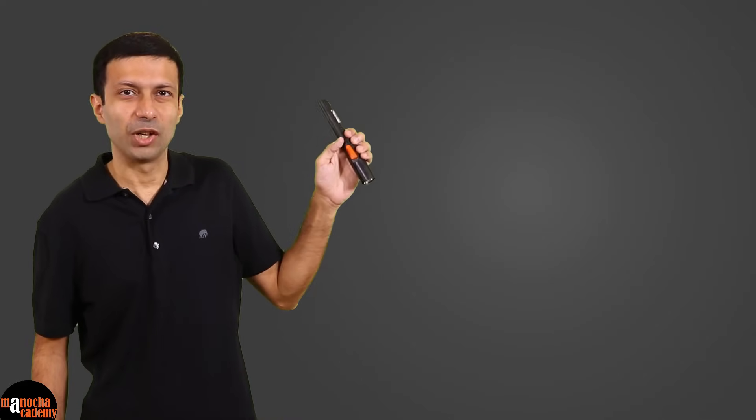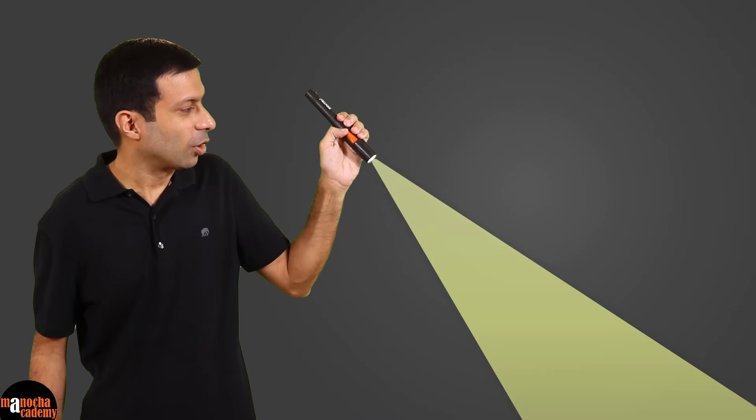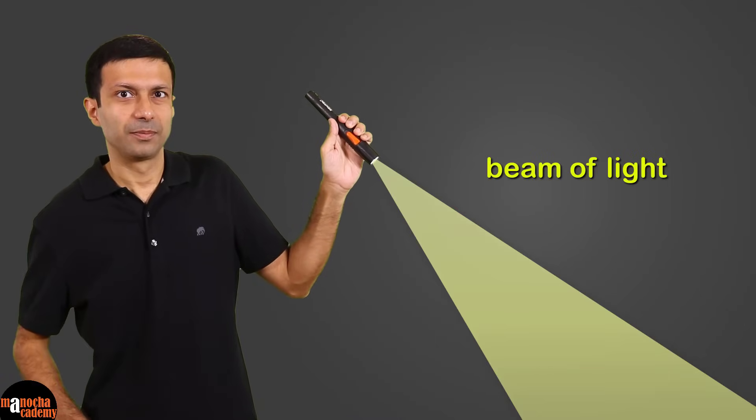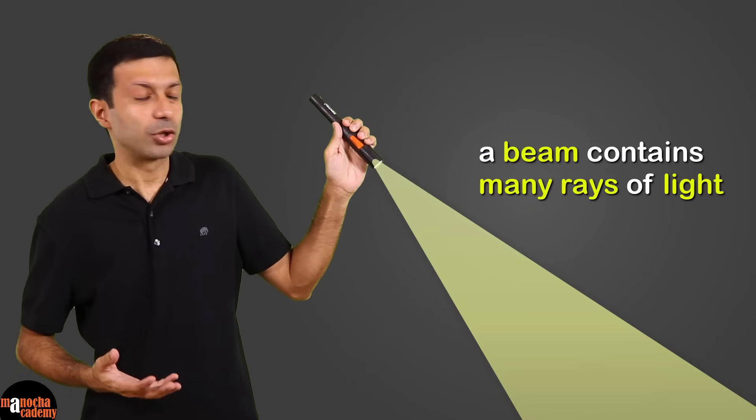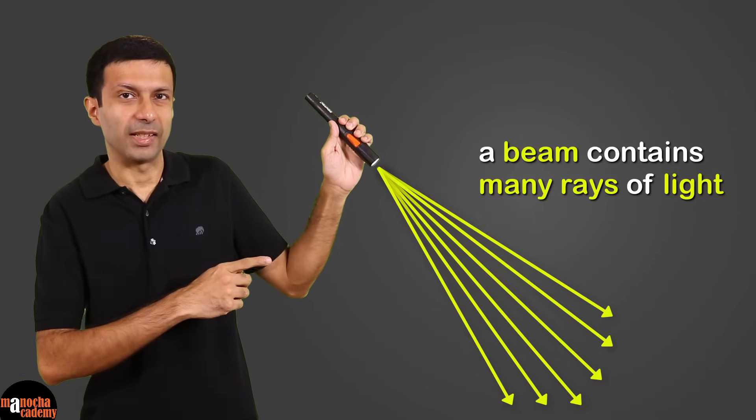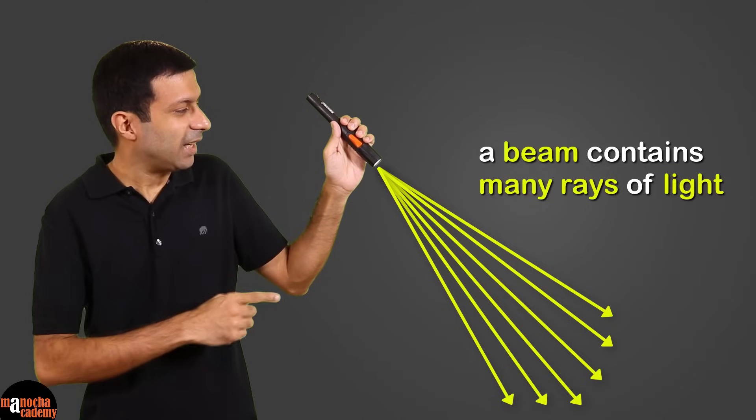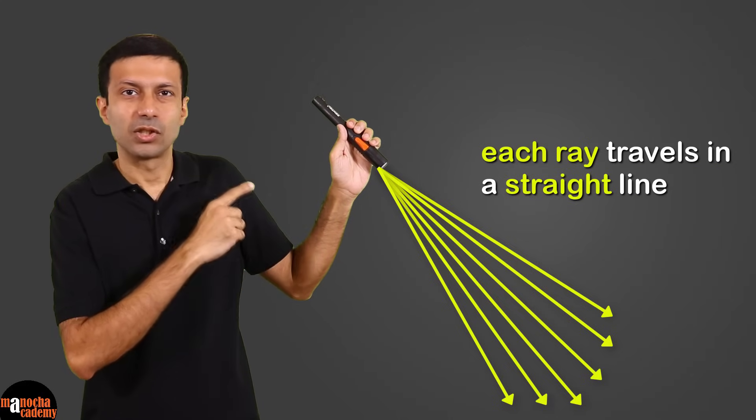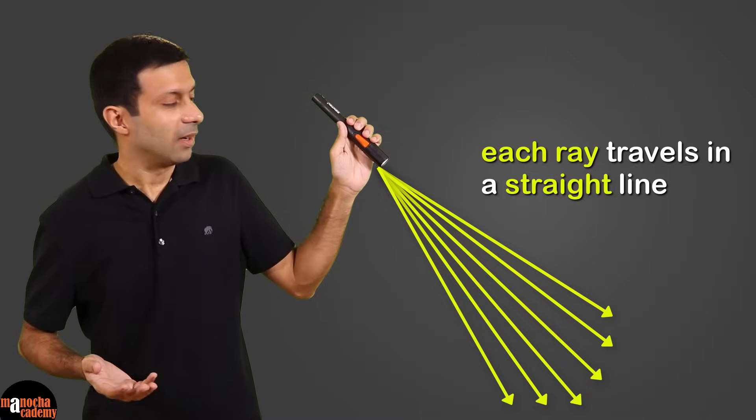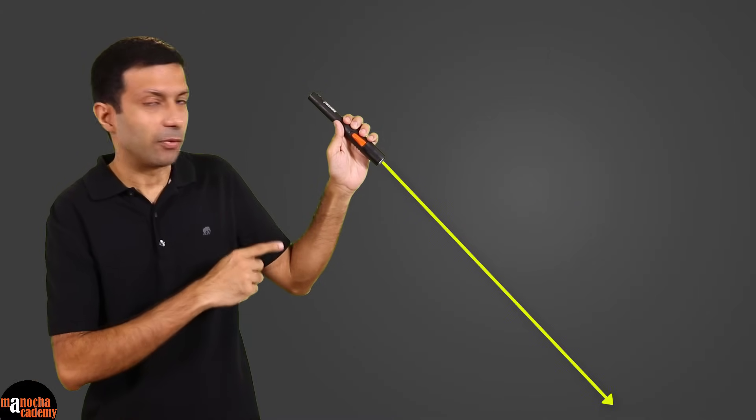I have this torch here with me. When I switch on the torch, it gives out a beam of light. A beam is composed of many rays of light. As you can see, each ray is traveling in a straight line. Now for simplicity, let's consider a single ray of light.